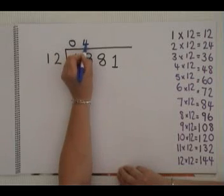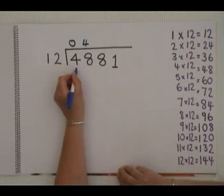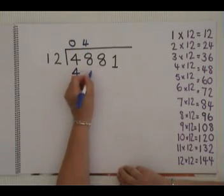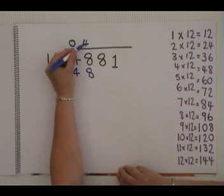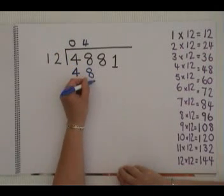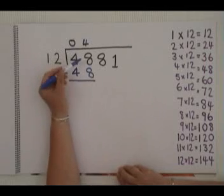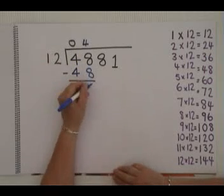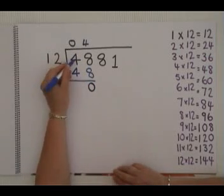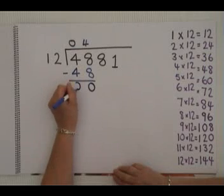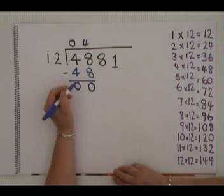So you would write 4 here, and with long division you would write the answer here, 48. 12 times 4 is 48. You would then take away, 8 take away 8 is 0, 4 take away 4 is 0. There's nothing left over.